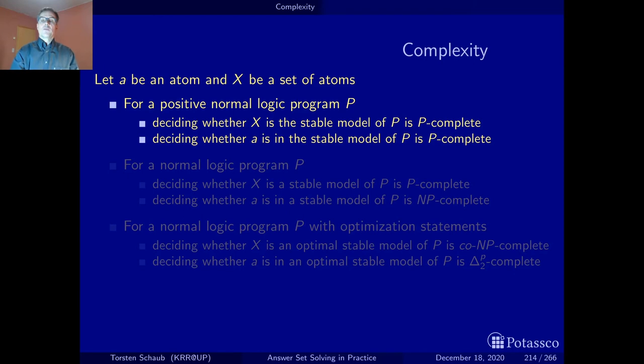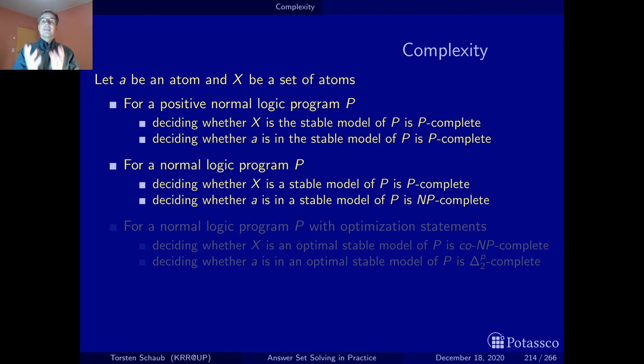With normal logic programs, we lift the expressiveness and allow negative body literals. Now things get more interesting. Deciding whether a set X is a stable model can be done in polynomial time—you only have to evaluate the equality: X equals the consequences of the program reduced by X. If you give me the X, I can check this easily. On the other hand, asking whether there is a stable model that contains an atom is NP-complete, because someone has to find the stable model. If you give me the stable model, I can check whether it contains X by looking at all the atoms. This is a typical NP-complete problem.